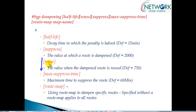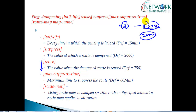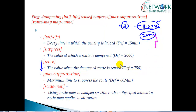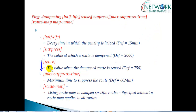The second parameter is reuse. If a route such as 11.0.0.0 is dampened — meaning it has exceeded the suppress threshold of 2000 — and the route then becomes stable, the decaying algorithm will periodically reduce the penalty points. When the penalty falls to 750 or below, the route becomes reusable, meaning it can be advertised again. This confirms the route is stable. If it is not stable, the suppressed points will keep increasing. The default reuse value is 750.